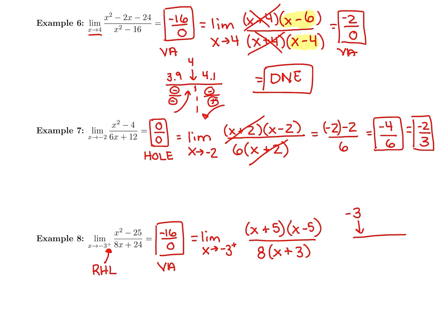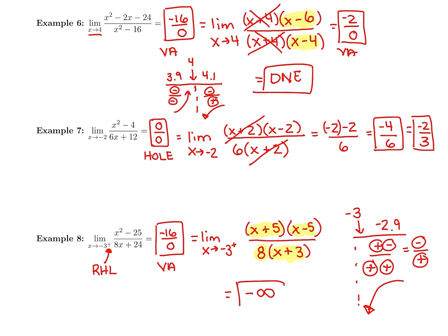Negative 2.9 is to the right of negative 3 since it's a bigger number. Plugging negative 2.9 into the factored form: x + 5 gives positive; x − 5 gives negative — so the top is negative. In the bottom, 8 is positive, and negative 2.9 plus 3 is positive. So we get a negative divided by a positive — the arrow goes down to negative infinity. The final answer for this right-hand limit is negative infinity.